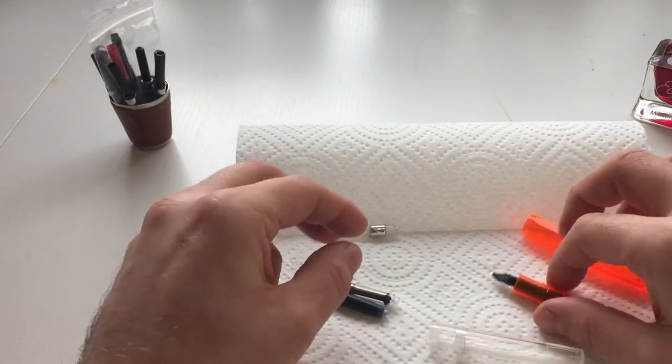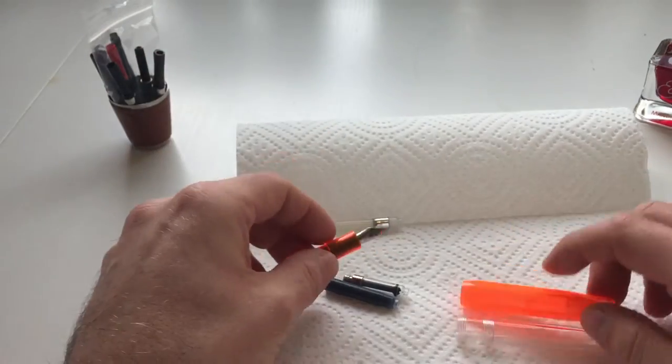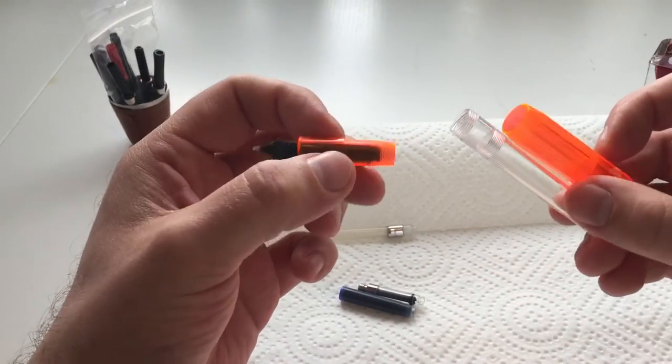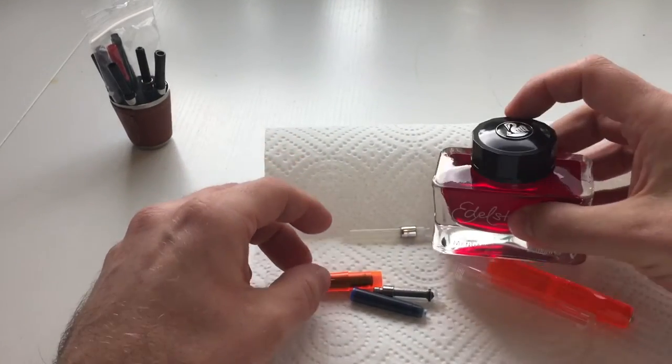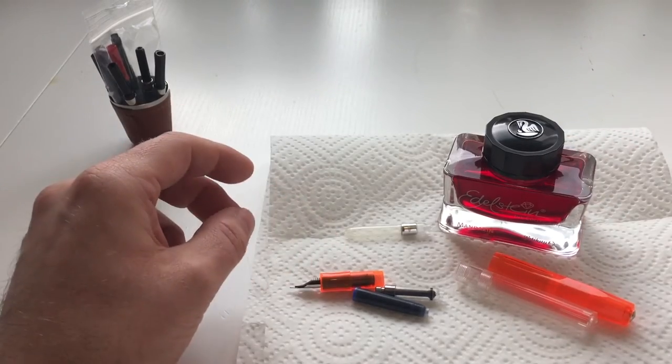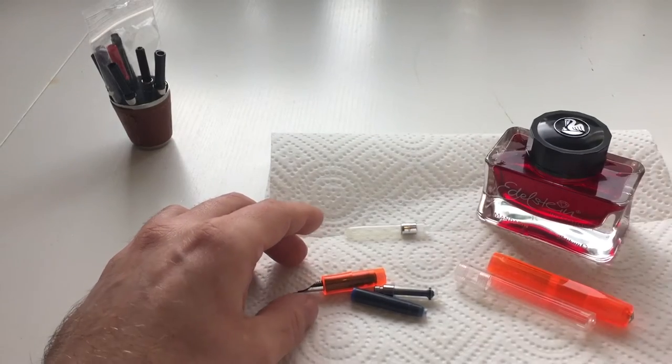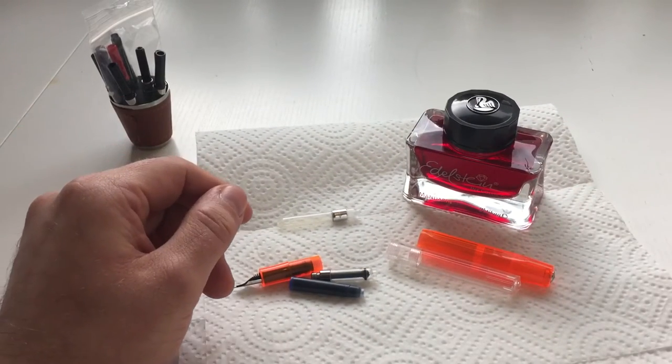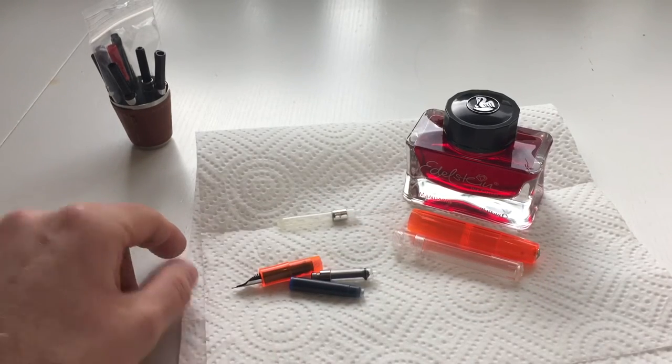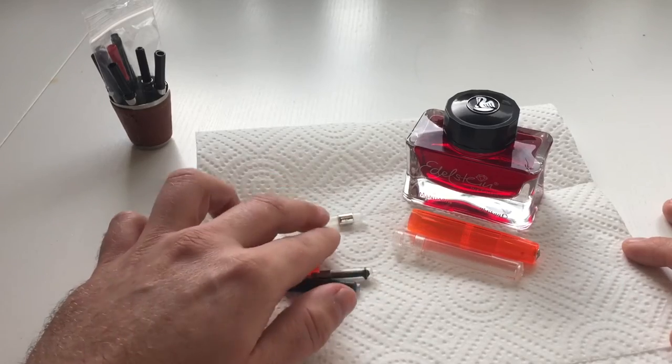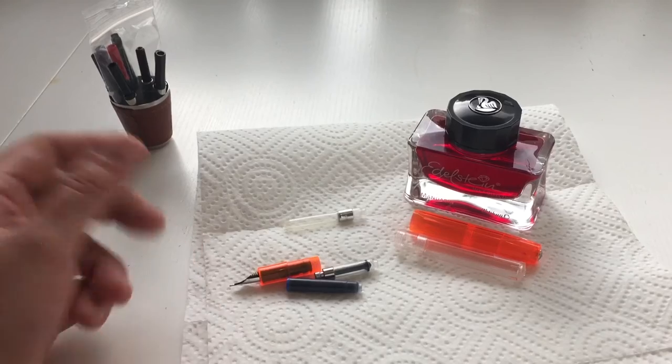I have a Kaweco Ice Sport here in orange, a pen I also recently got that I've just converted to an eyedropper using Edelstein Mandarin, which is one of my favorite orange inks because it has a really nice color and shades very well. I've recently converted that orange Ice Sport into an eyedropper and wrote it right now.